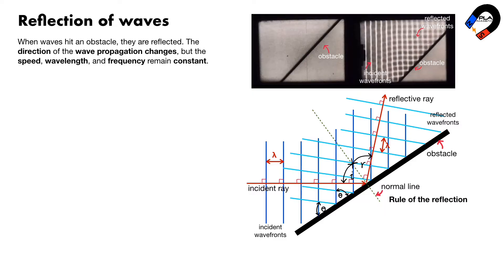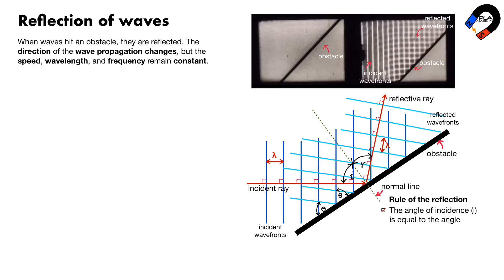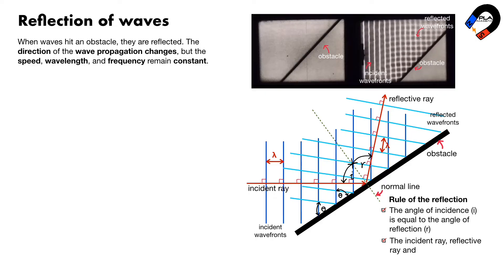Rules of reflection: the angle of incidence I is equal to the angle of reflection R. The incident ray, reflected ray, and normal all lie on the same plane.